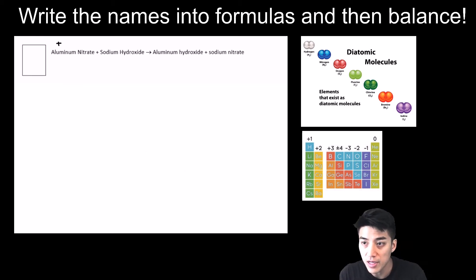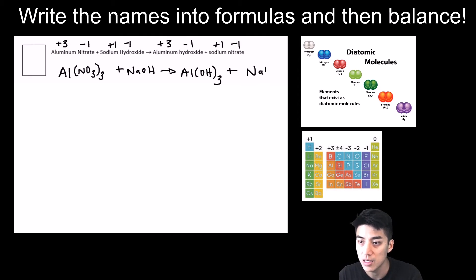Let's write the names into formulas again. Write out the charges. Aluminum is +3, nitrate is -1, and nitrate is a polyatomic. After you crisscross the charges, that's what you have. Let's move on to sodium hydroxide. Sodium is +1, hydroxide is -1, and the formula is OH. We're writing out the charges and crisscrossing them. Please review the chapter eight playlist if this is throwing you off. Aluminum hydroxide is Al(OH)3, and sodium nitrate is NaNO3.